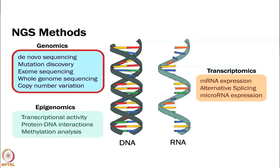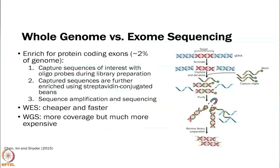I wanted to go through some examples of next-gen sequencing methods and how they are used. We will start with genomics, then we will move into transcriptomics, then we will end on epigenomics. For genomics, the two commonly used methods are whole exome and whole genome sequencing.